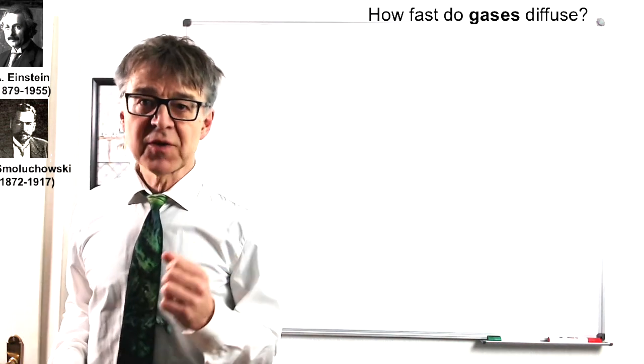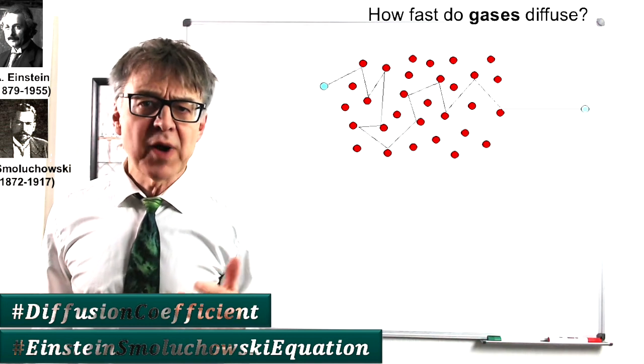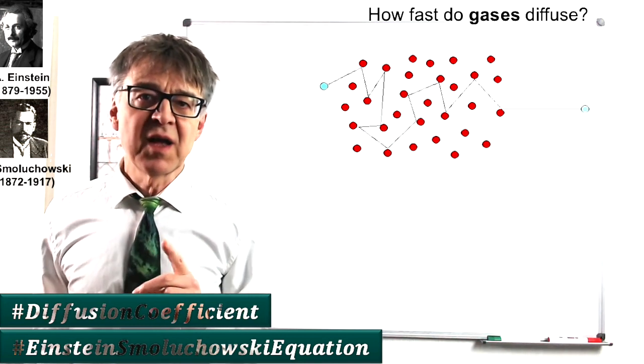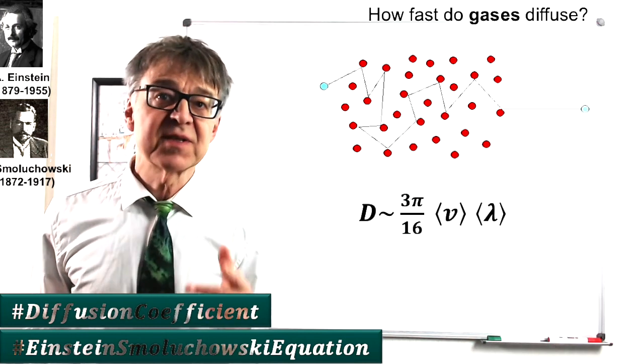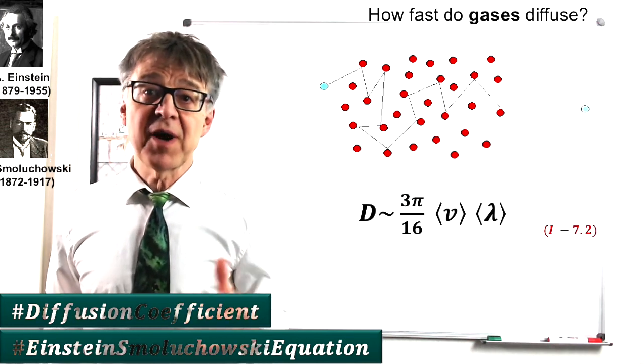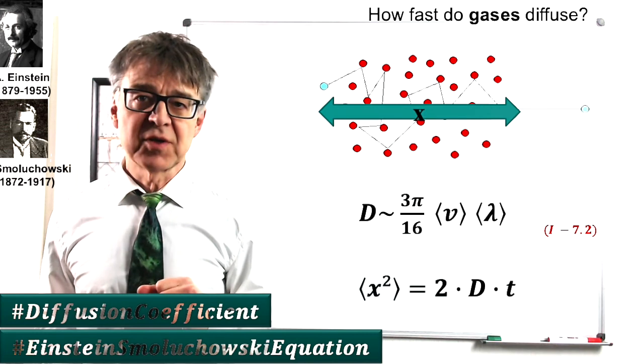Einstein and Smoluchowski were able to explain Fick's laws with their random walk model. In particular, they were able to calculate the displacement x. This is a distance to quantify how far a particle moves from its starting point by diffusion.